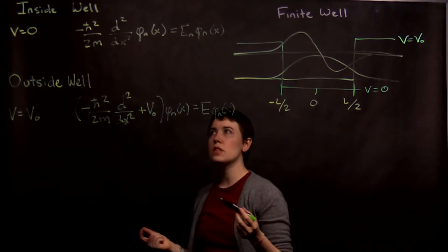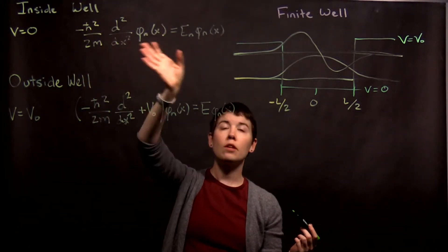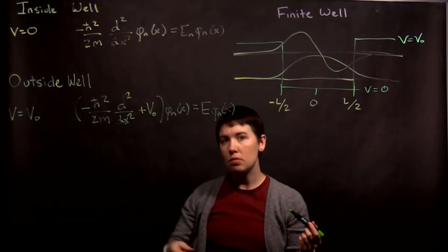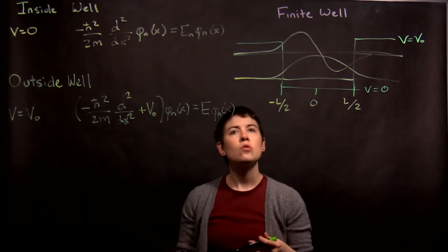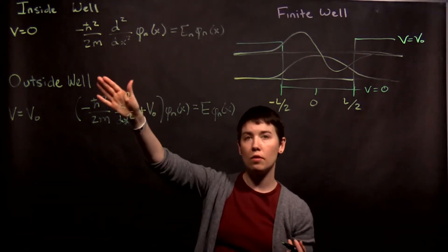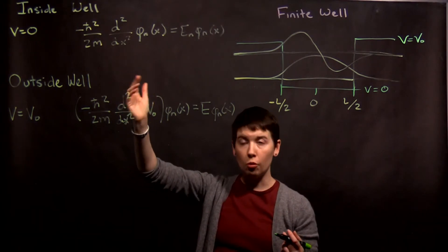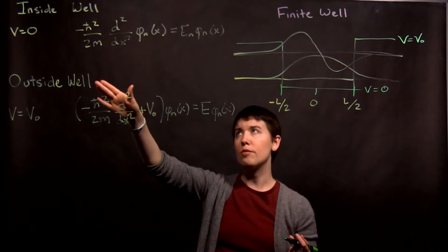In the case of inside the well, we plug in V equals zero, the potential term drops out, and we're left with this equation. That's actually the same differential equation that we in fact had for the infinite well. So this is important. There's already videos that go through how we solve this differential equation for the infinite well. You get sine and cosine or complex exponentials, however you want to write it.